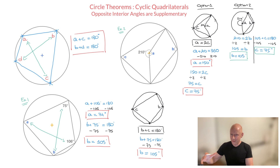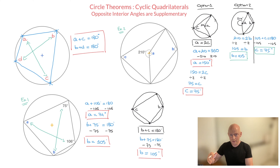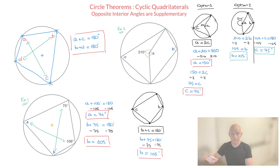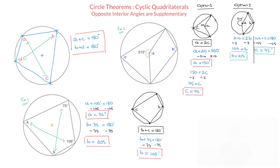And there we go. That's it for this video on circle theorems, and in particular the cyclic quadrilateral theorem, which tells us that the opposite interior angles of a cyclic quadrilateral are supplementary, meaning they add up to 180 degrees. And that's it for this tutorial.